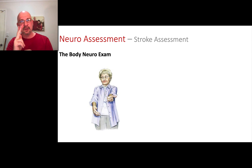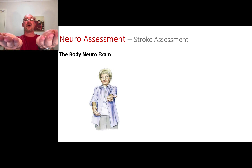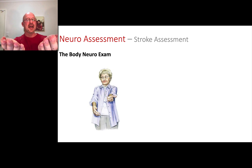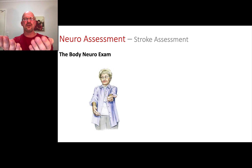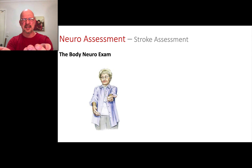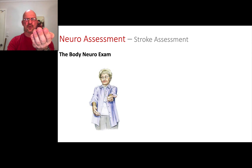I always test pronator drift in three steps. The first is with their eyes open, holding up the pizza box. The next, I ask them to close their eyes and keep their hands there. I wait about five or ten seconds and say, just keep your hands up — I want to see if your hands are moving at all. If they don't start to pronator drift, they've passed the second stage.